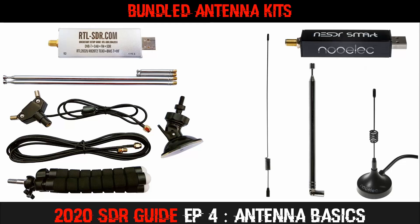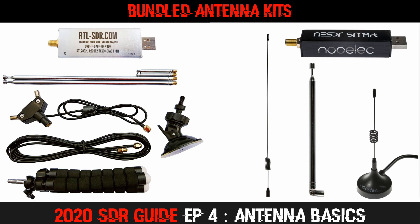Many SDR beginners start off with either the RTL-SDR or NuELEC bundled kits. These are great value starter kits because they include everything you need to begin exploring the world of software defined radio. There are links to both of these bundles in the description below. As you'll see from the photos they include various types of antennas. The common antenna in both is the telescopic whip, something you often receive with base and mobile scanners as well.